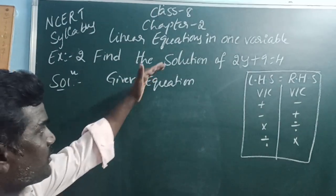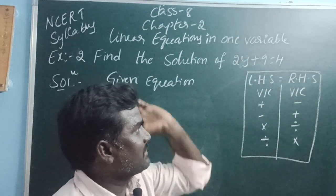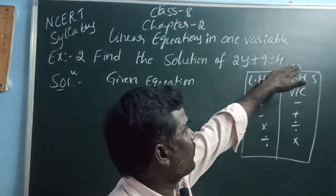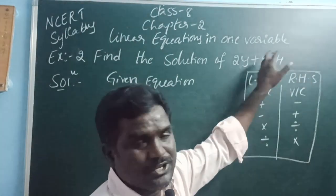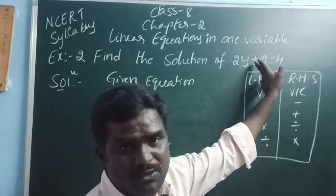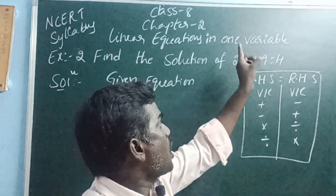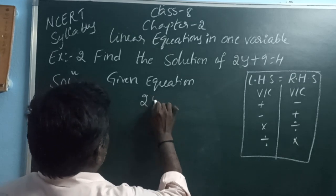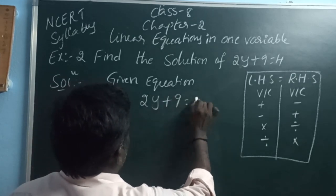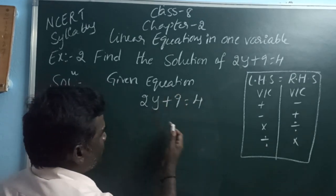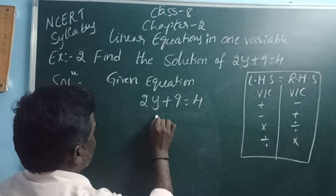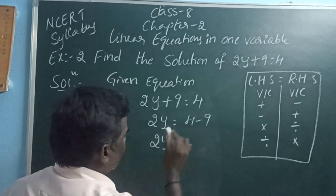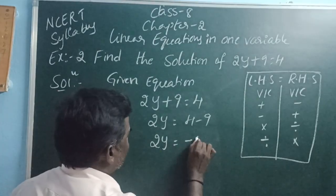Example 2: Find the solution of 2y plus 9 is equal to 4. Here, 2y plus 9 is a linear expression equal to 4, a numerical expression — so it is a linear equation in one variable. Given equation: 2y plus 9 equals 4. Plus 9 is moving to the right side and becomes minus. So 2y is equal to 4 minus 9, which is minus 5.